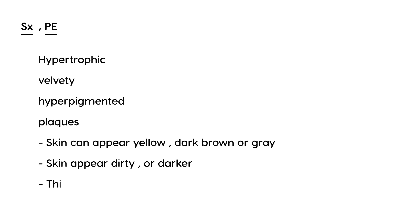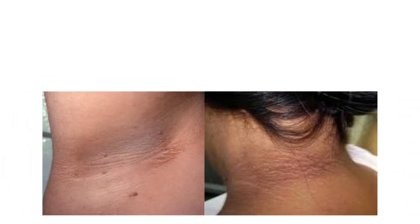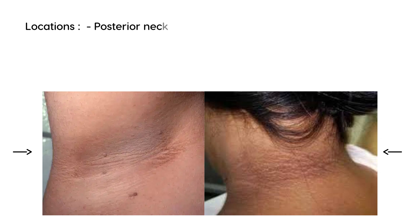Essentially, what you have is a situation where there is thickening and hyperplasia of the epidermis. Here are a couple of pictures — this one involves the back of the neck, and this one is the axilla or armpit. As you can see, there is a very characteristic appearance to this type of skin disorder.